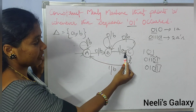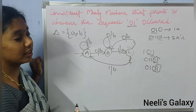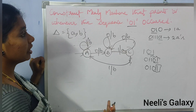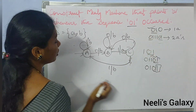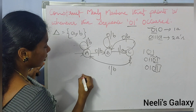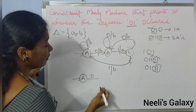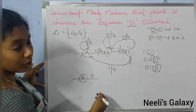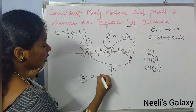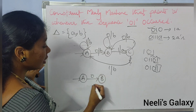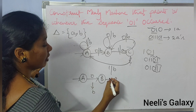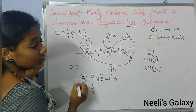Let us check whether this construction is correct or not by taking an example. Let us take the string 0-1-0. We need to start with state A. From state A with alphabet 0, the transition goes to state B.